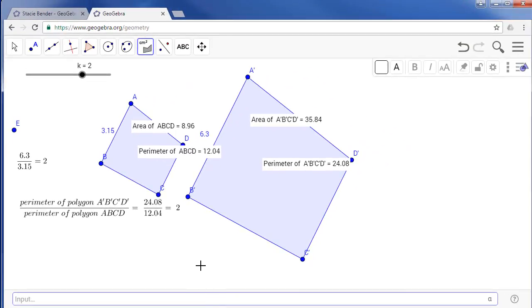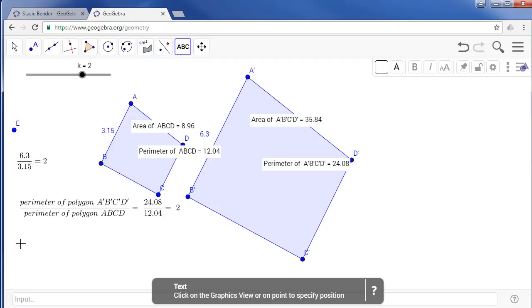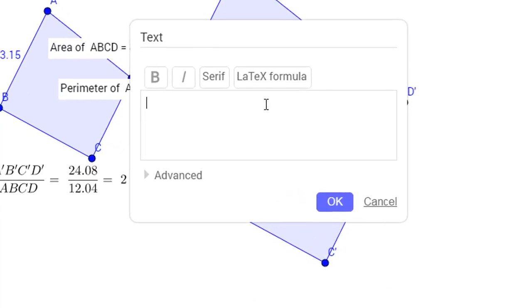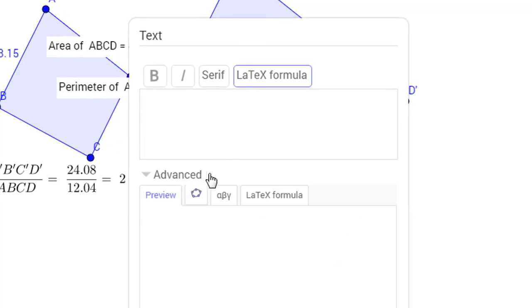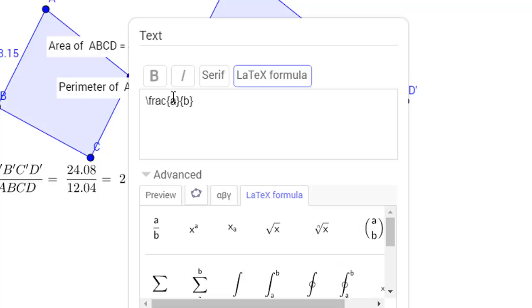So now that we have our two areas, let's create one more text box. And once again, we'll get that LaTeX formula and choose an A over B. In place of A, we want to call it area polygon A prime B prime C prime D prime. And in place of B, we're going to call this area polygon A, B, C, D.